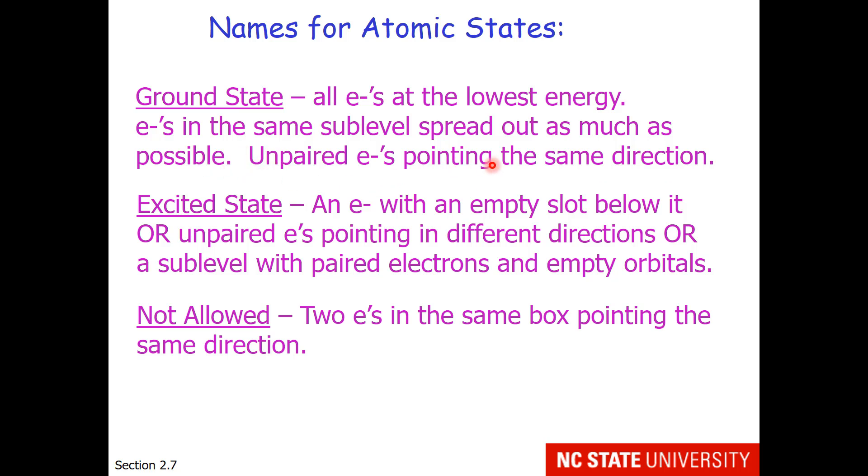An excited state is higher energy, and this is when you have an electron with an empty slot below it, or unpaired electrons pointing in different directions, or a sublevel with paired electrons and empty orbitals. Not allowed means that two electrons are in the same box, which represents an orbital, pointing in the same direction. That means we have given them the same four quantum numbers.